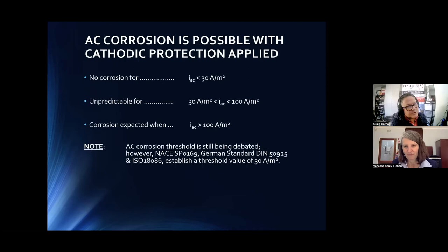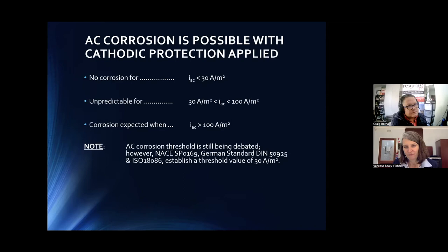The German research suggests anything below 20 amps per square meter AC current density shows no corrosion. Some argue corrosion is possible if certain pH values or iron concentrations are present. In the range from 30 up to 100 amps per square meter it becomes unpredictable, and above 100 amps per square meter there is significant likelihood of AC corrosion.